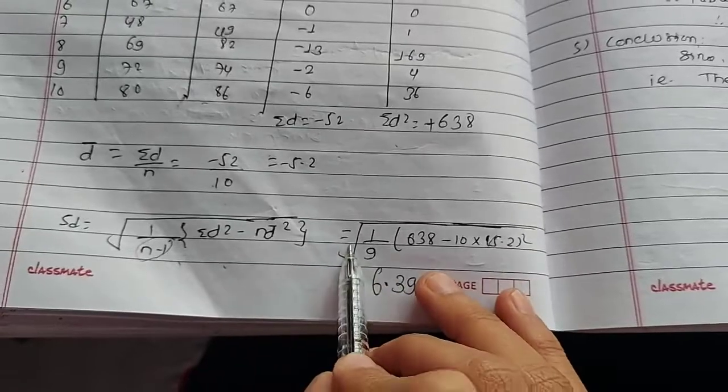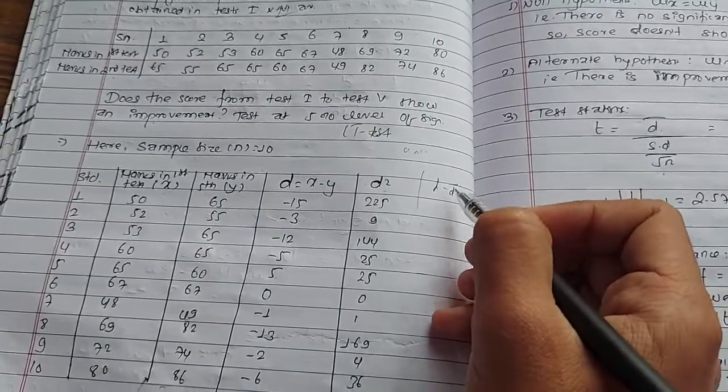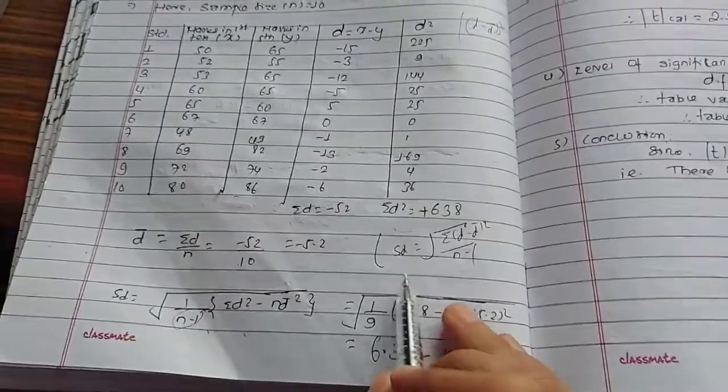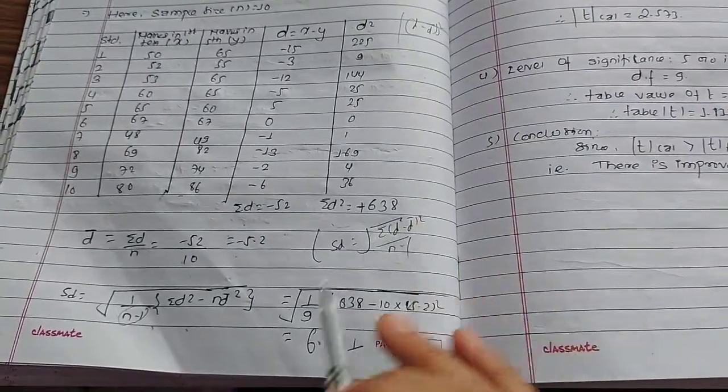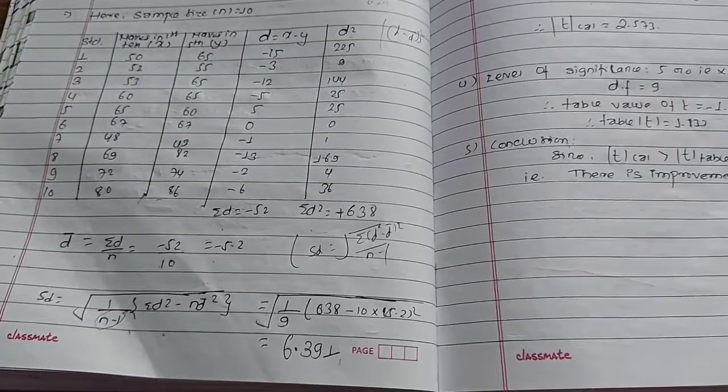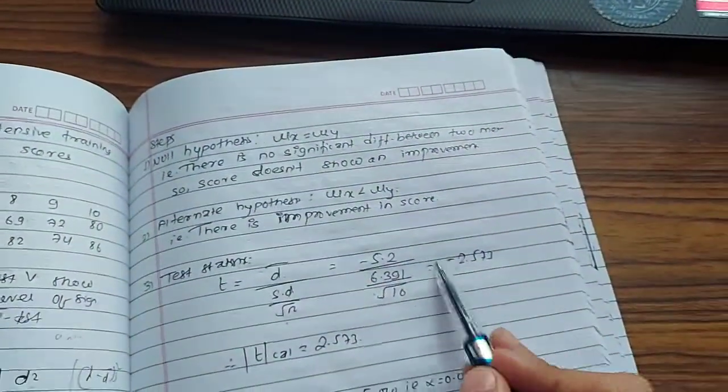The formula summation d squared minus n times d bar squared. Summation d minus d bar squared upon n minus 1. Standard deviation, d bar is already calculated. 638 minus 10 times 5.2 squared upon 9 equals 1931 upon 9 equals 7.31.